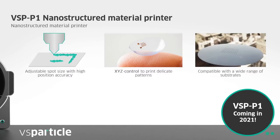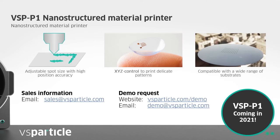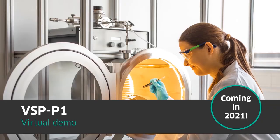To summarize, our printer has an adjustable spot size with high position accuracy. Using the XYZ stage, we can print delicate patterns, and our technology is compatible with a wide range of substrates. For sales inquiries, please contact us at sales@vsparticle.com. If you would like to request a demo, please visit vsparticle.com/demo or email us at demo@vsparticle.com. I hope this presentation has given you sufficient background on how our VSP-P1 nanostructured material printer works. My colleague Sofia will now take you to our virtual lab and showcase the VSP-P1 in action.